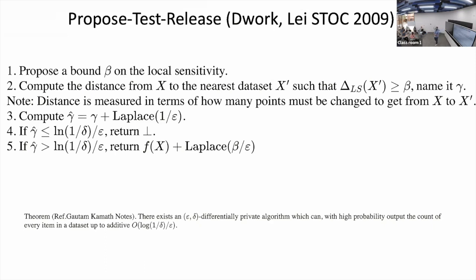In propose-test-release, you first propose a bound beta on the local sensitivity. The test part asks: is your bound good enough that if you consider this as your local sensitivity, it would guarantee DP without any exceptions? If not, it returns nothing — it says that's a bad bound, try again. This is a way of converting an informal local sensitivity into a formal notion of how you calibrate noise. The release gate is essentially a yes-or-no gate: the test tries to find an exception where the bound would fail, which ends up being a special case of a counting query.